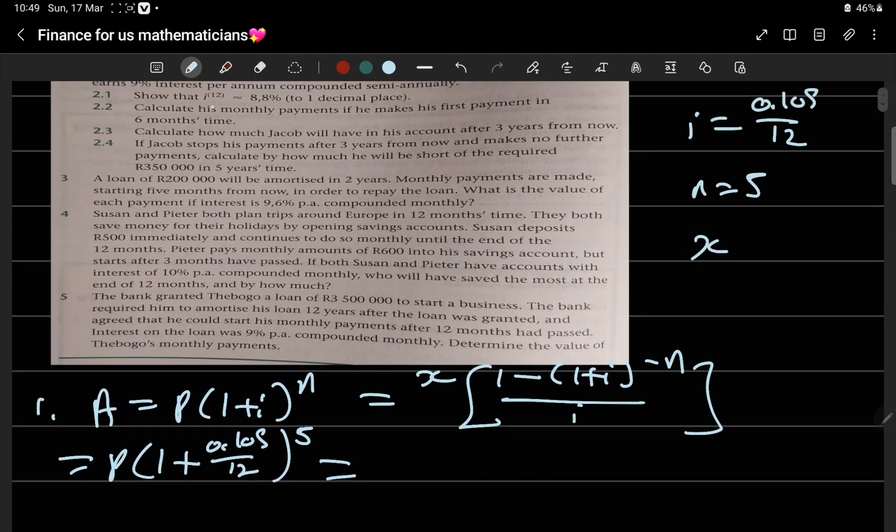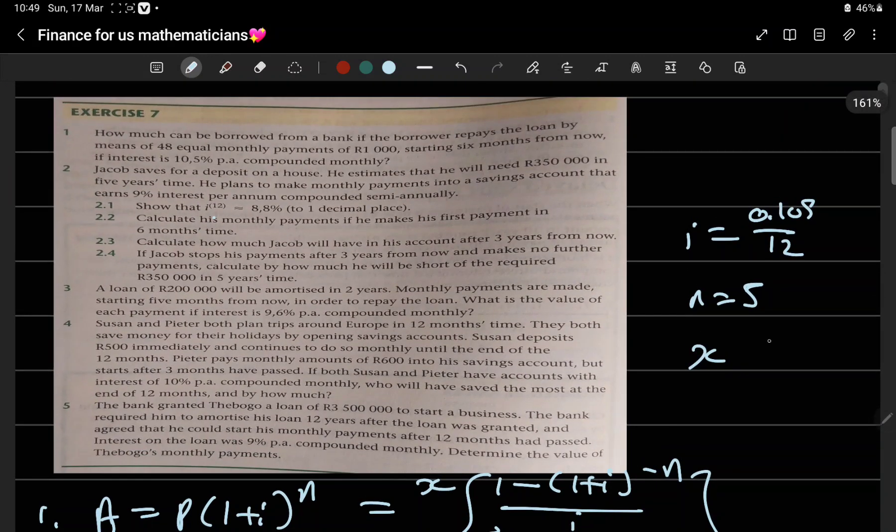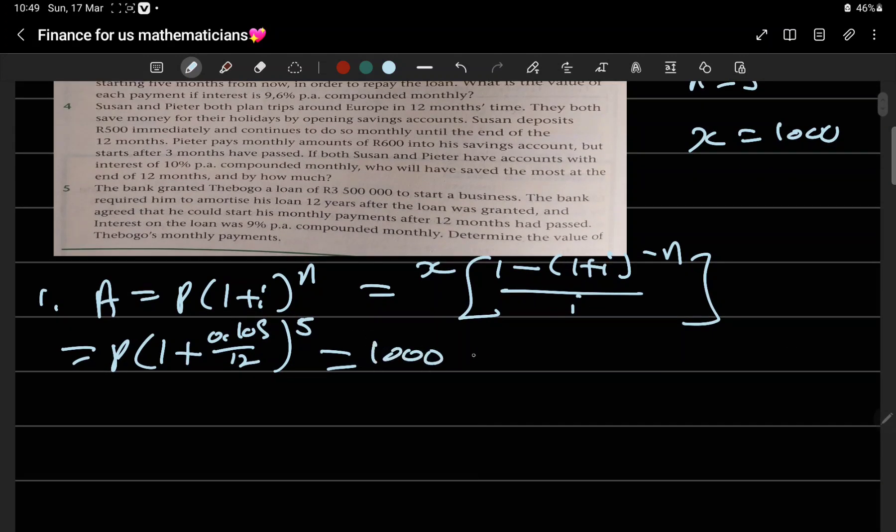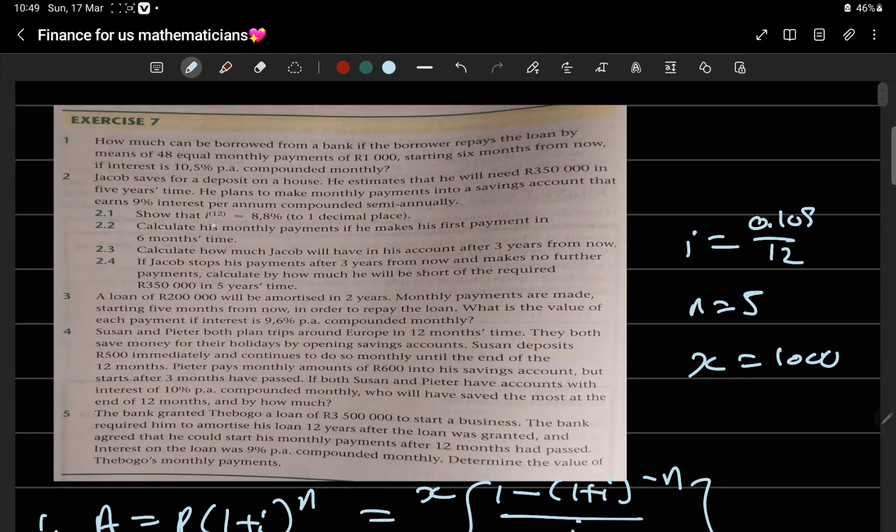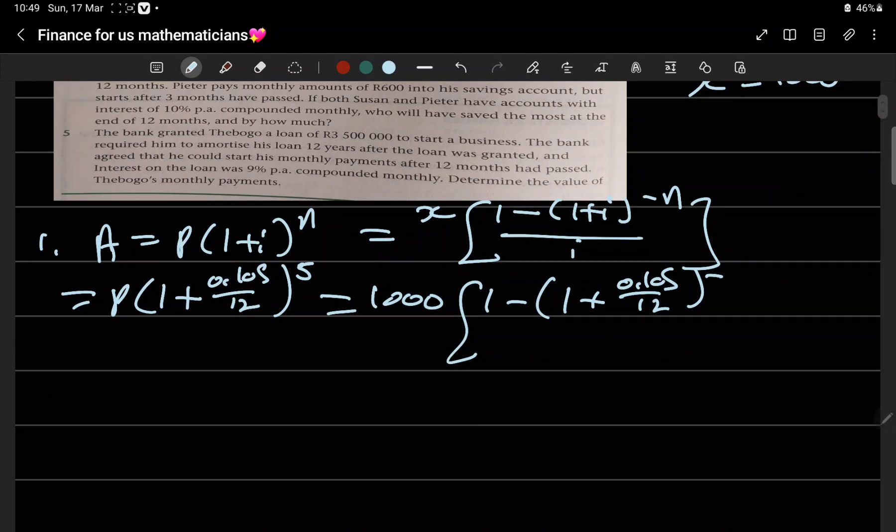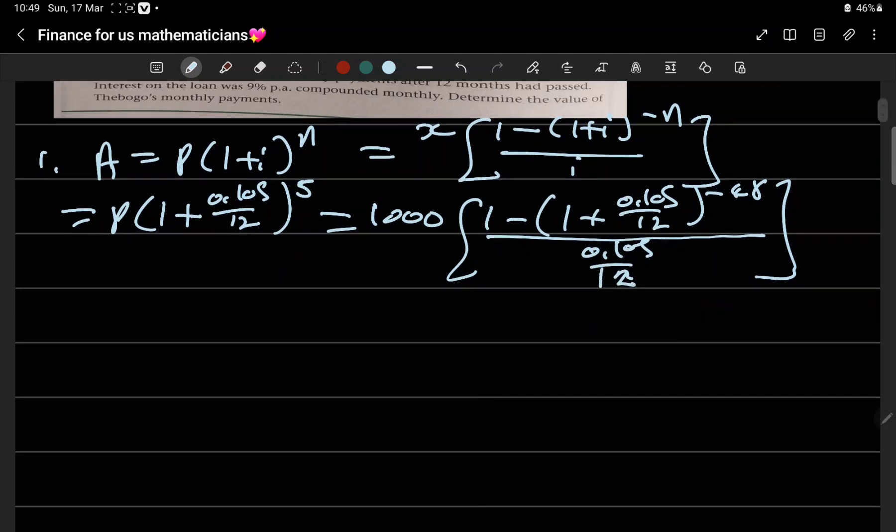What is our x? x is the monthly payments, given as 1000. Then 1 minus (1 plus 0.105/12)^(-48) equal monthly payments, over 0.105/12. Let's solve for P by dividing both sides by the coefficient of P.